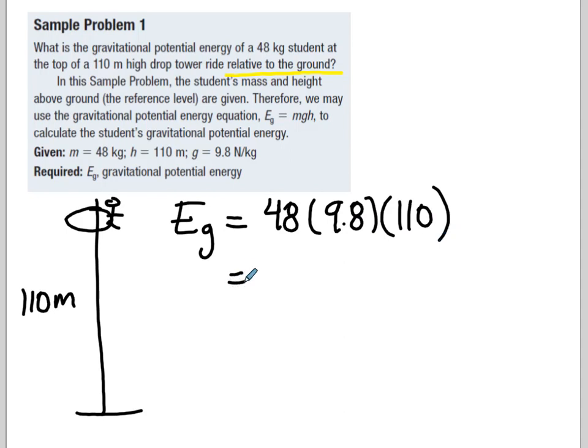So if we go 48 times 9.8 times 110, we get a very large number, 51,744 joules. Which is a lot more than that book on the desk we just did in the last one. So the higher you go, the more potential energy you have when you're close to the earth's surface.